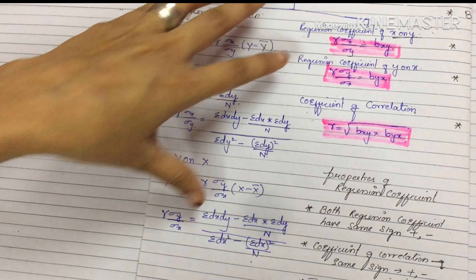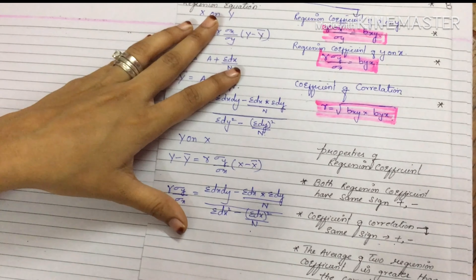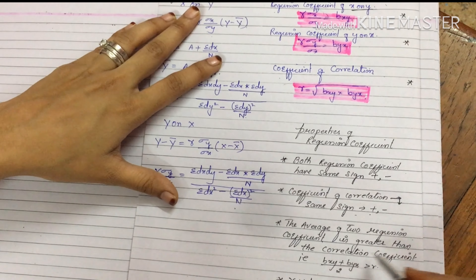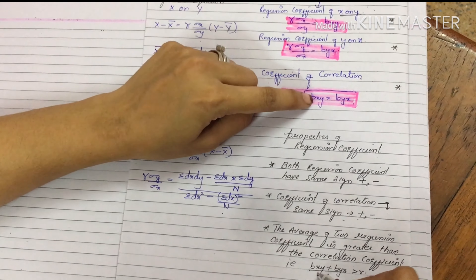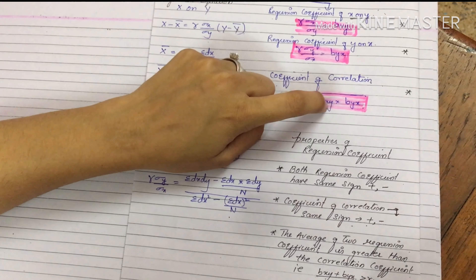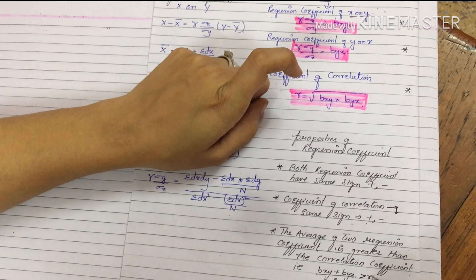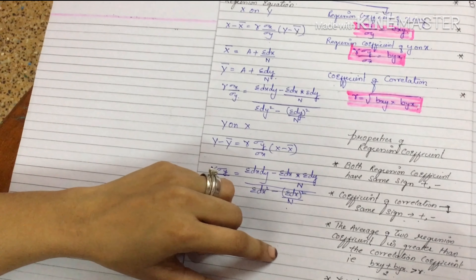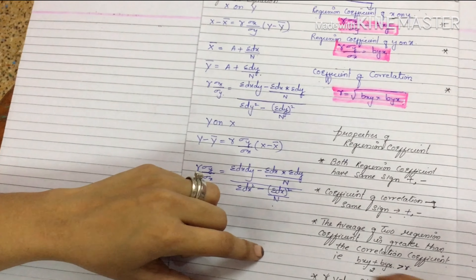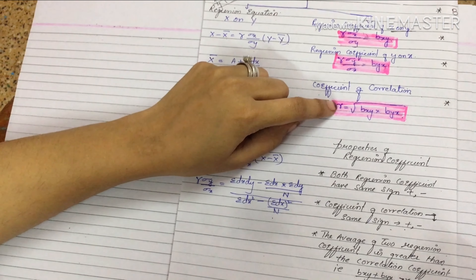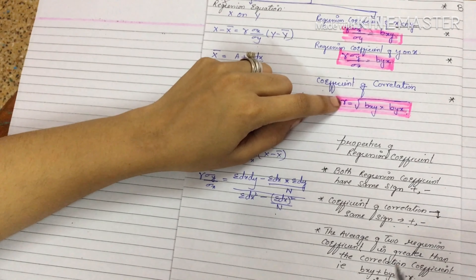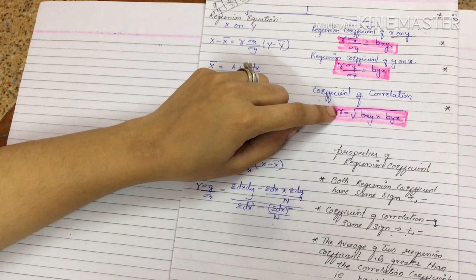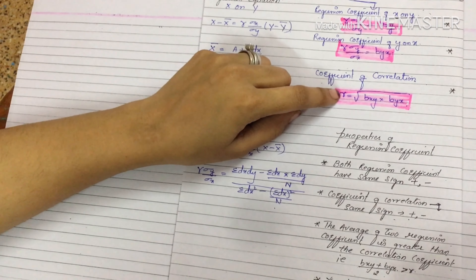Property two: the average of two regression coefficients is greater than the correlation coefficient, meaning (bxy + byx) / 2 is greater than r. Property three: the value of r should be between plus 1 and minus 1. If we get something like 4.23, that is not correct — it must lie between -1 and +1.